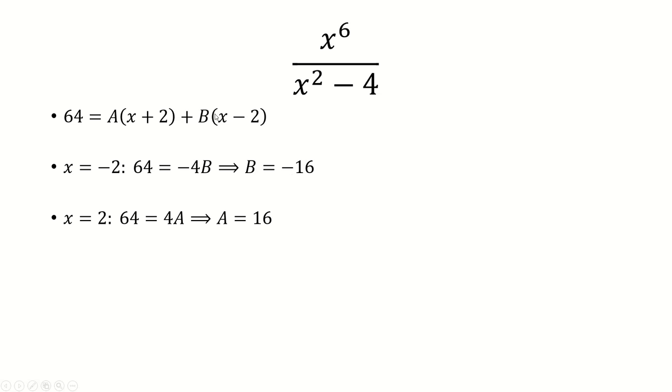The second choice of x is going to make x minus 2 equal to 0, which is 2, and that gives us 64 is 4a, which means a is 16.